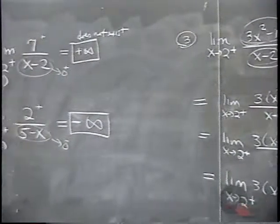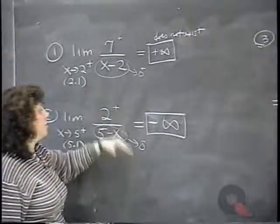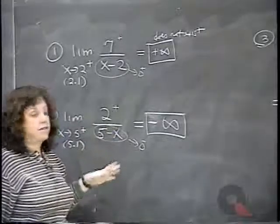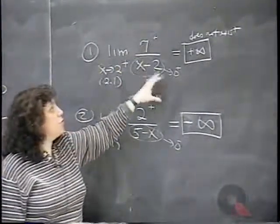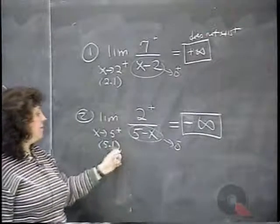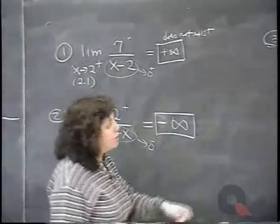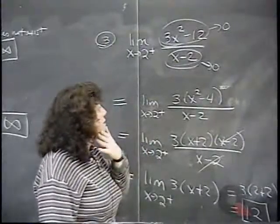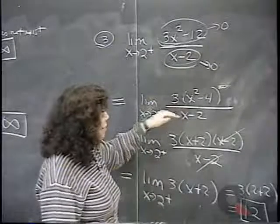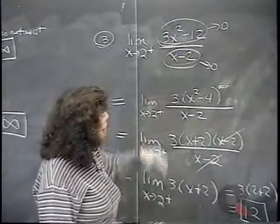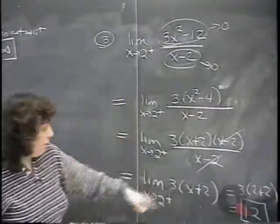To summarize the first three examples: in problems 1 and 2 the bottom went to zero but the top didn't — the limit was infinite and we used testing values (2.1 and 5.1) to find the sign. In problem 3, both top and bottom went to zero — the zero-over-zero indeterminate form — so we factored and cancelled the common factor (x−2), then found a finite limit of 12.